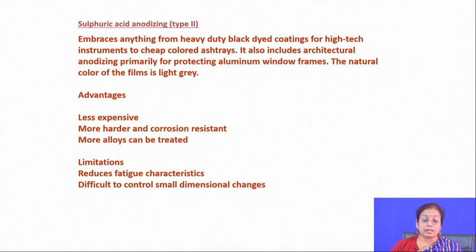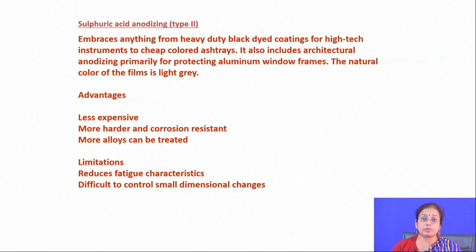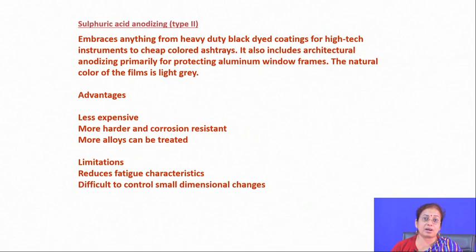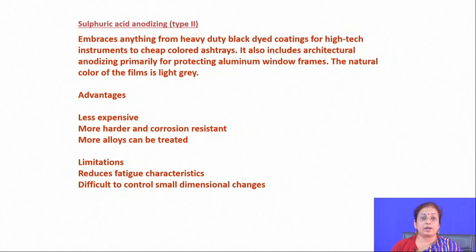Sulfuric acid anodizing ranges from heavy-duty black dye coatings for high-tech instruments to architectural anodizing primarily for protecting aluminum window frames. It can also be used for protection against corrosion, scratch resistance, and improved fatigue properties, and sometimes gives harder and more corrosion-resistant coatings. In some cases sulfuric acid is preferred over chromic acid because of its higher hardness and resulting good corrosion resistance. This is because the density of the oxide scale formed in sulfuric acid anodizing is much higher than in chromic acid anodizing.